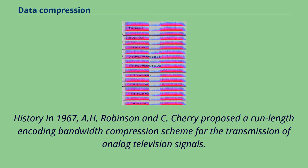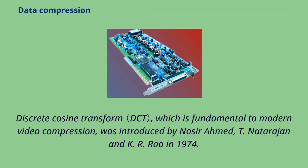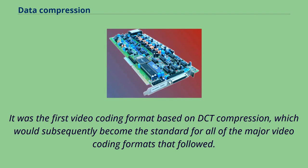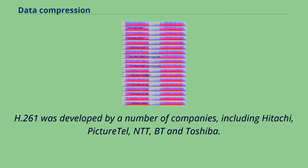In 1967, A. H. Robinson and C. Cherry proposed a run-length encoding bandwidth compression scheme for the transmission of analog television signals. The discrete cosine transform, fundamental to modern video compression, was introduced by Nasir Ahmed, T. Natarajan, and K. R. Rao in 1974. H.261, which debuted in 1988, commercially introduced the prevalent basic architecture of video compression technology. It was the first video coding format based on DCT compression, which would subsequently become the standard for all major video coding formats that followed. H.261 was developed by a number of companies, including Hitachi, PictureTel, NTT, BT, and Toshiba.